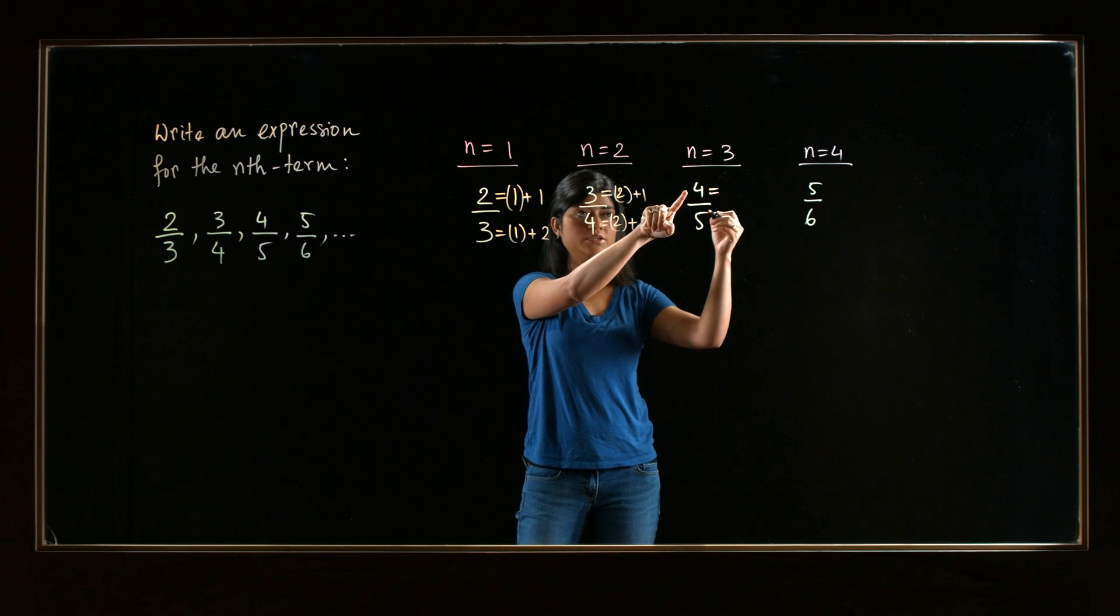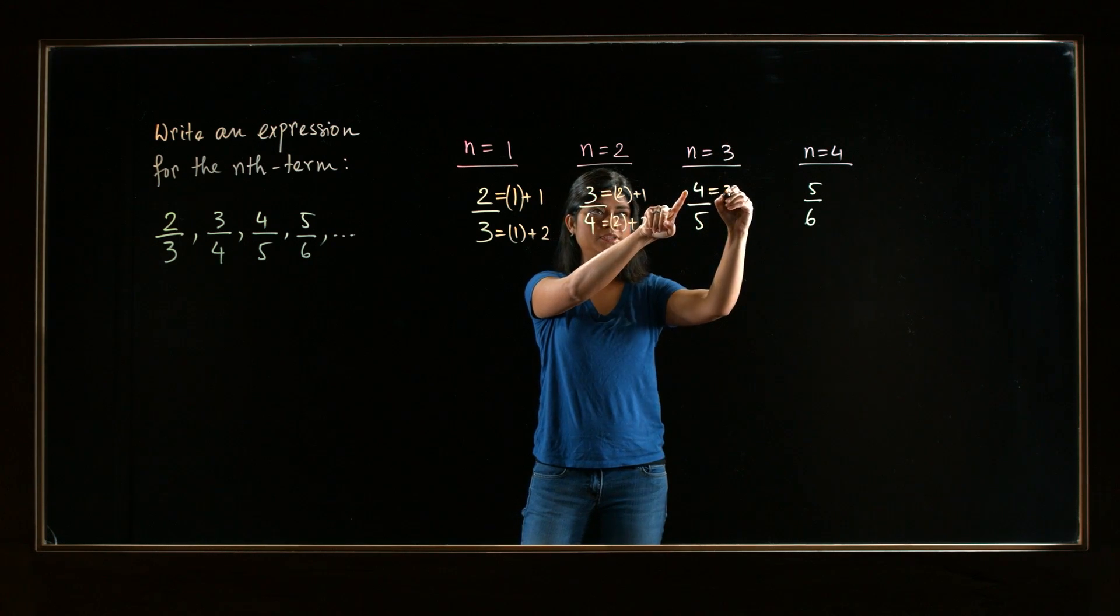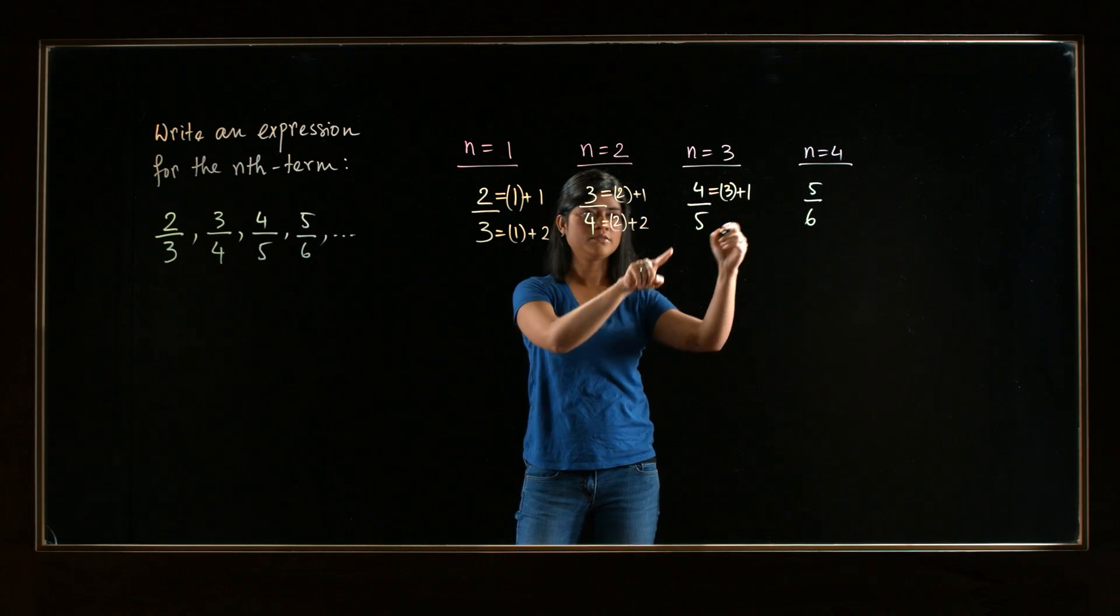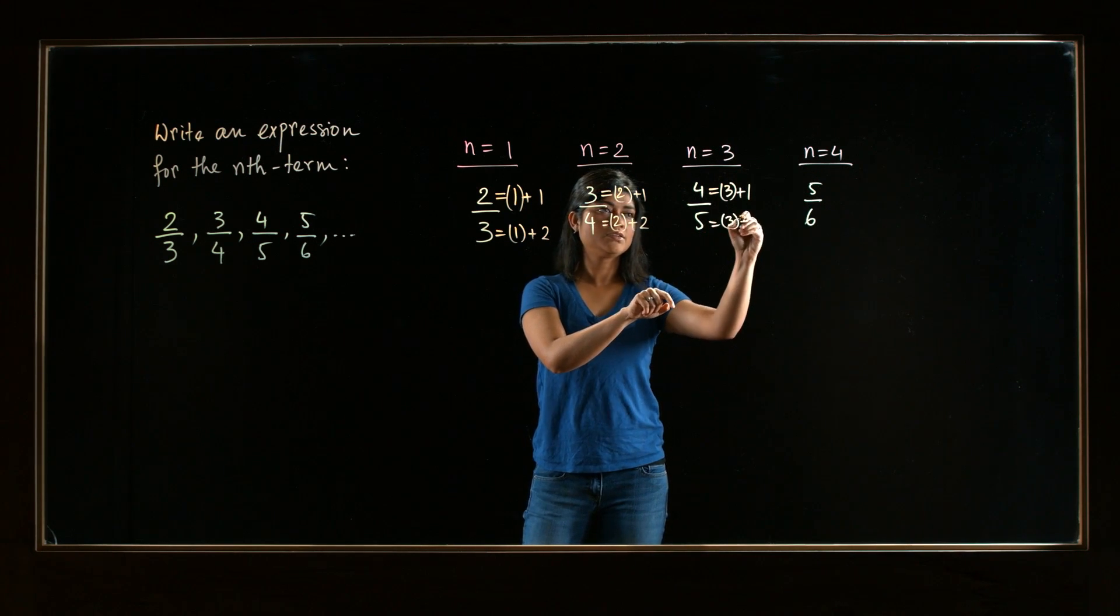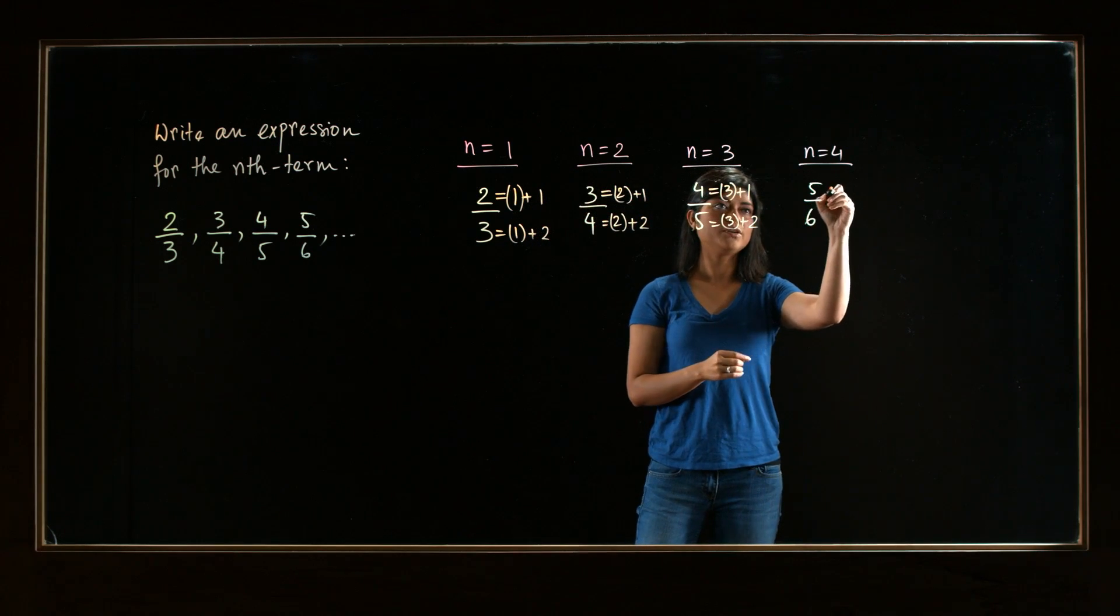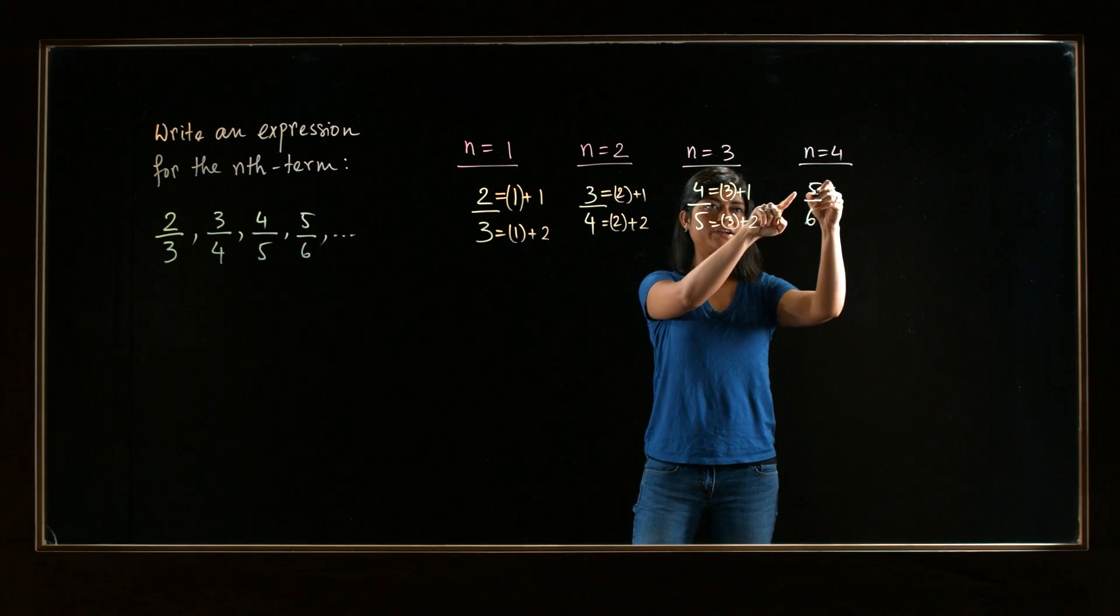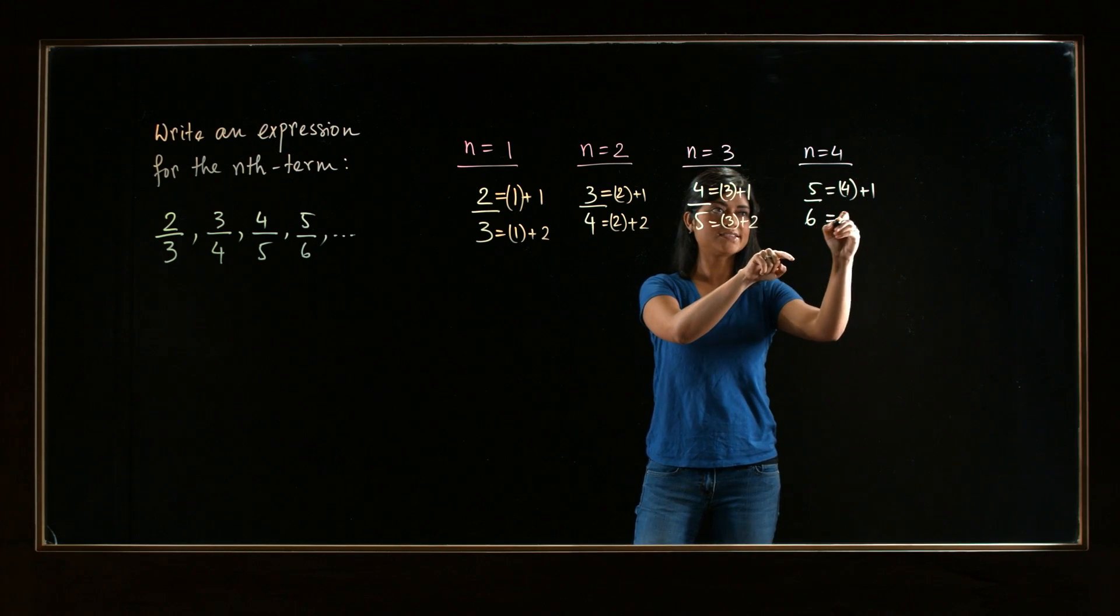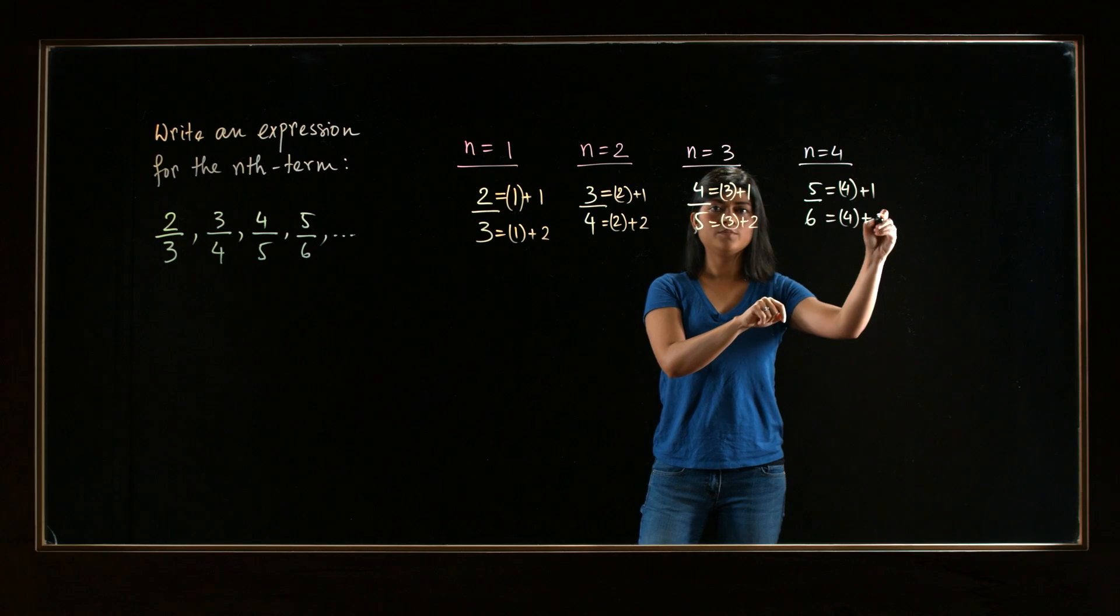So wondering whether that same pattern will follow for the third term. So what is 4 equal, in terms of 3? It's, again, 3 plus 1. So n plus 1. And 5 is 3 plus 2. See? Do you see the pattern? Let's check one more time, the last one. In terms of 4, you can write 5 as 4 plus 1. And 6 is 4 plus 2.